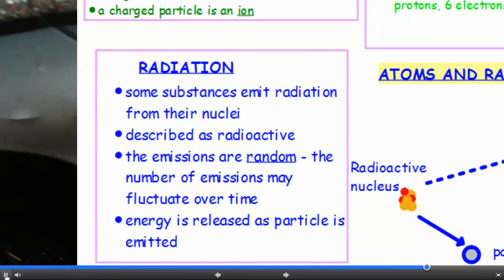So what do we mean by radiation? Now some substances emit radiation from their nuclei, and they're described as radioactive. Now these emissions are random, which means that the number of emissions may fluctuate over time, and you can't predict them. But the key thing is that energy is released as the particle is emitted from the nucleus.